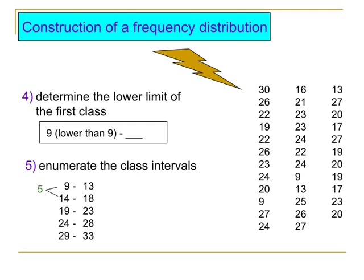Next is to enumerate the class intervals. We now have the class intervals. The class size is the difference between consecutive class intervals. The computed class size is 5, so the difference between two consecutive intervals must be 5.